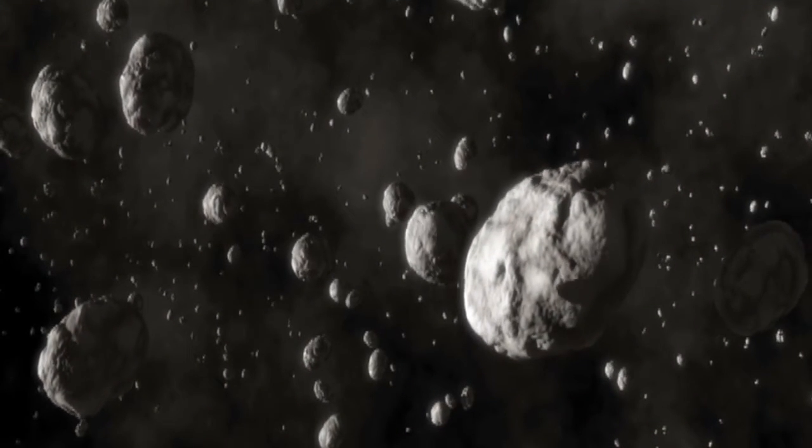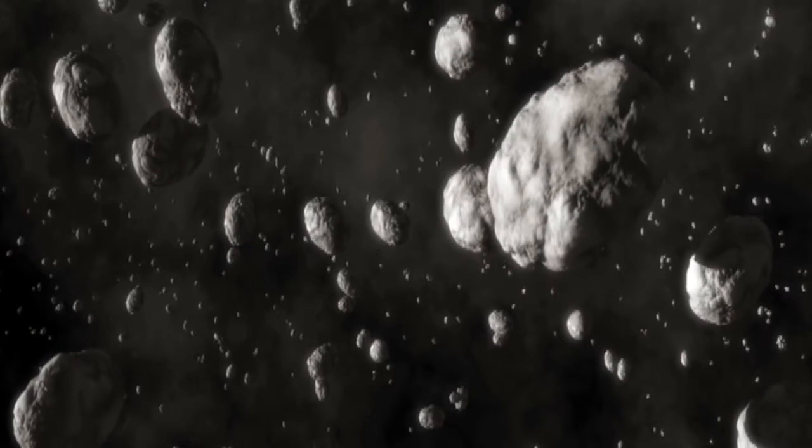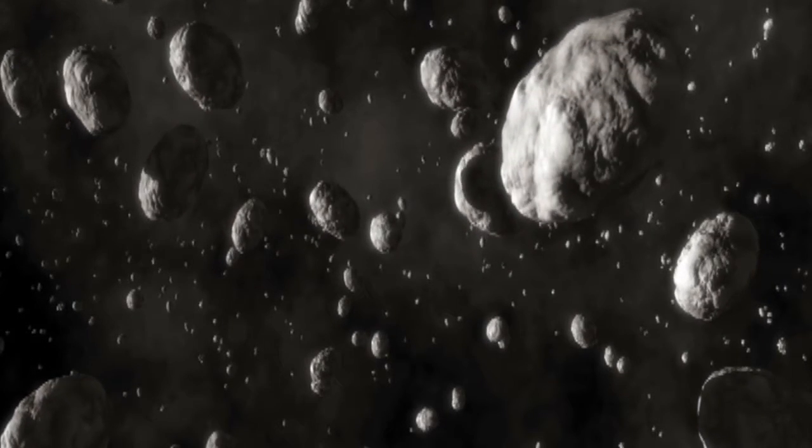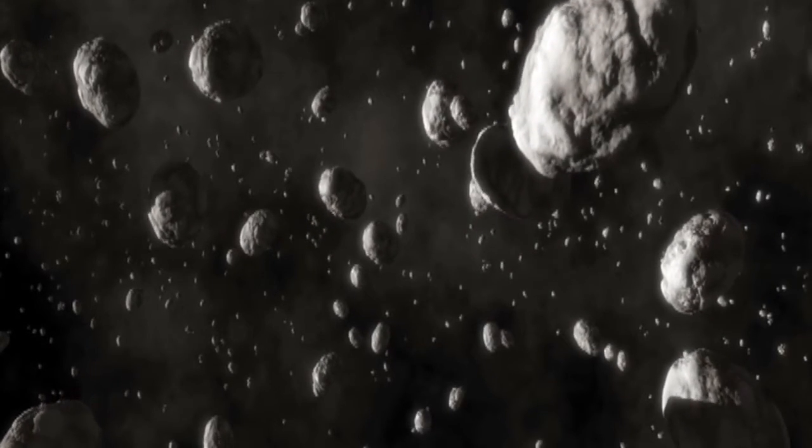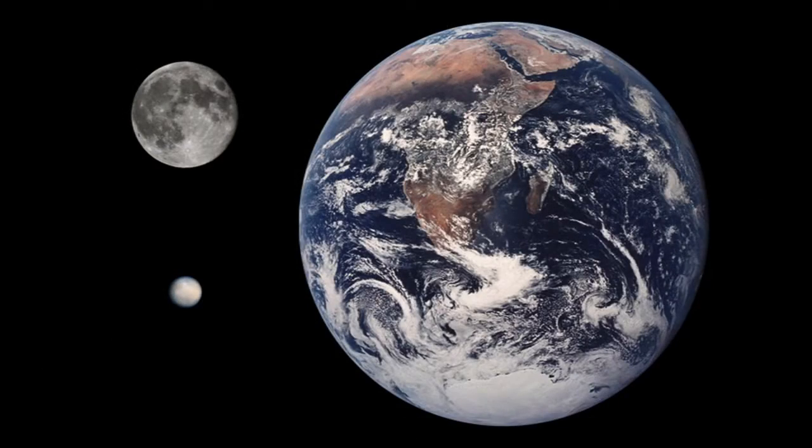Asteroids range in size from pebbles to 600 miles across and have irregular shapes. An asteroid called Ceres is one-quarter the size of our moon.